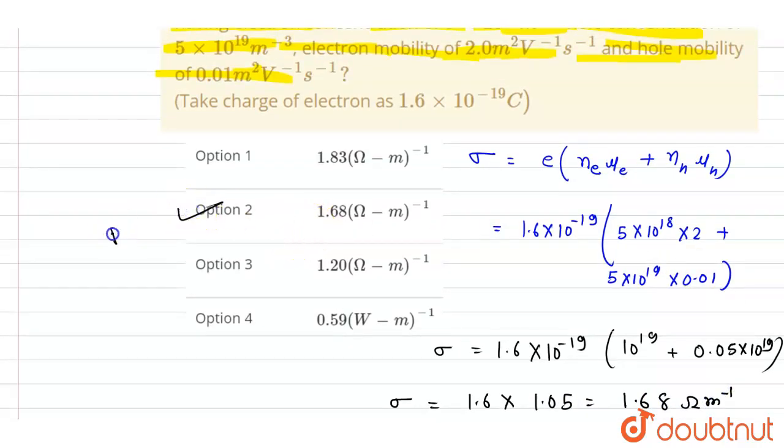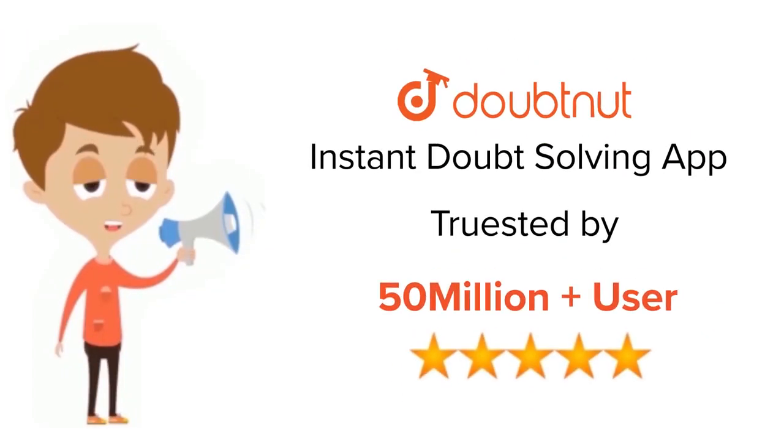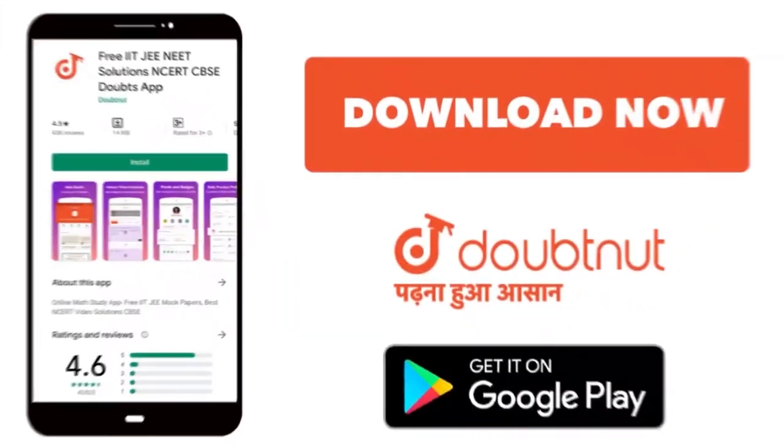.68, so it is B. Thank you! For class 6-12, IIT, and NEET level, trusted by more than 5 crore students, download Doubtnet today.